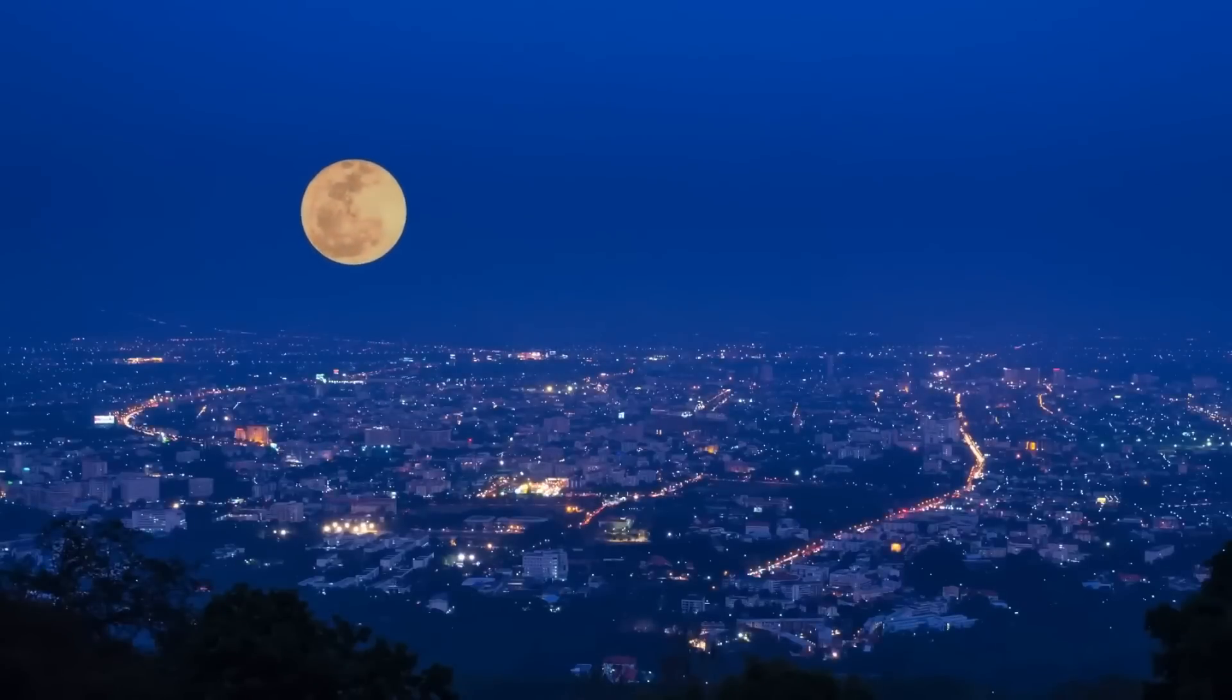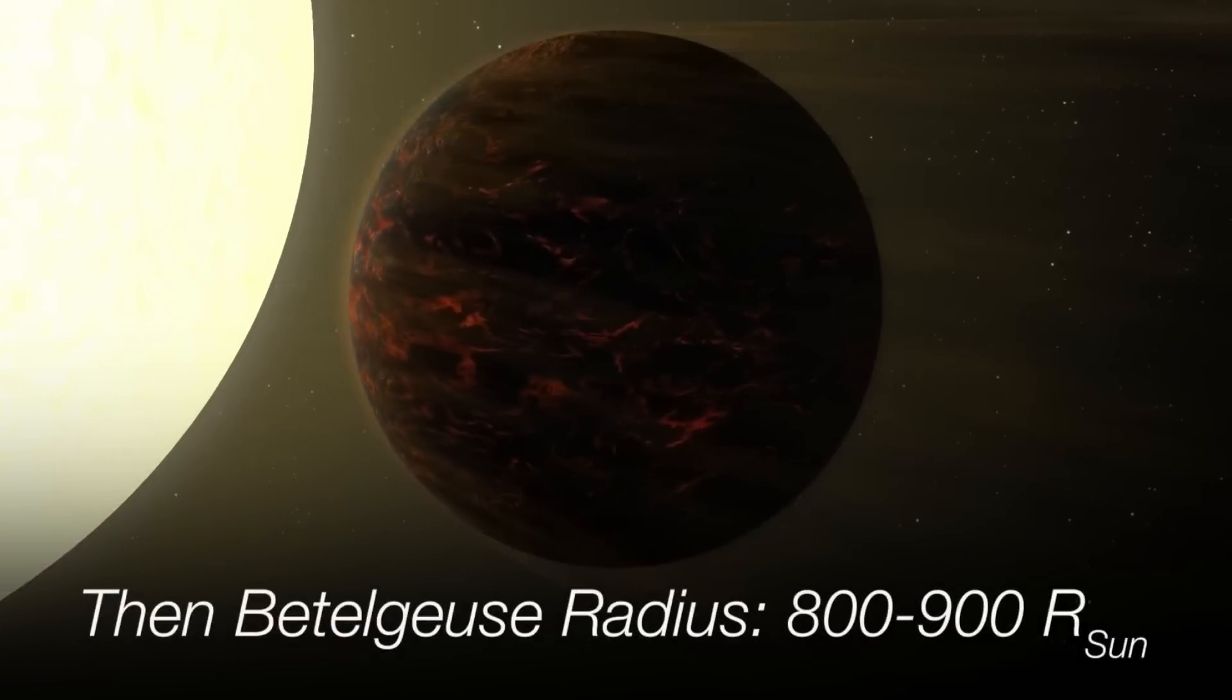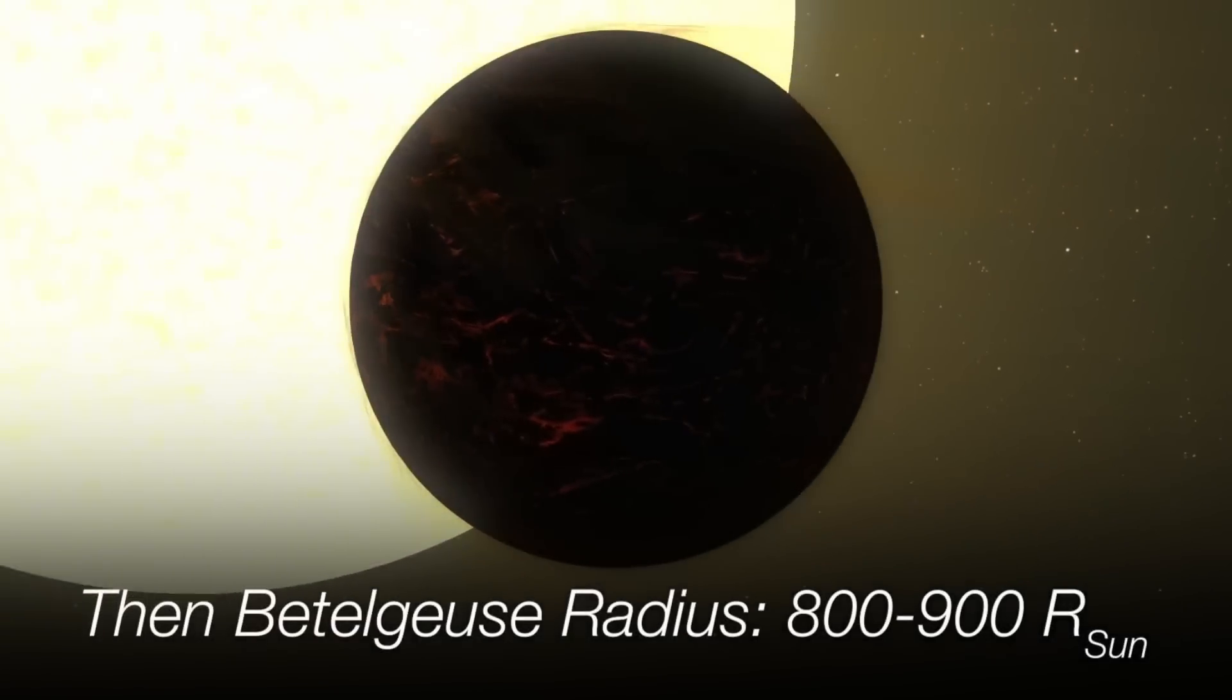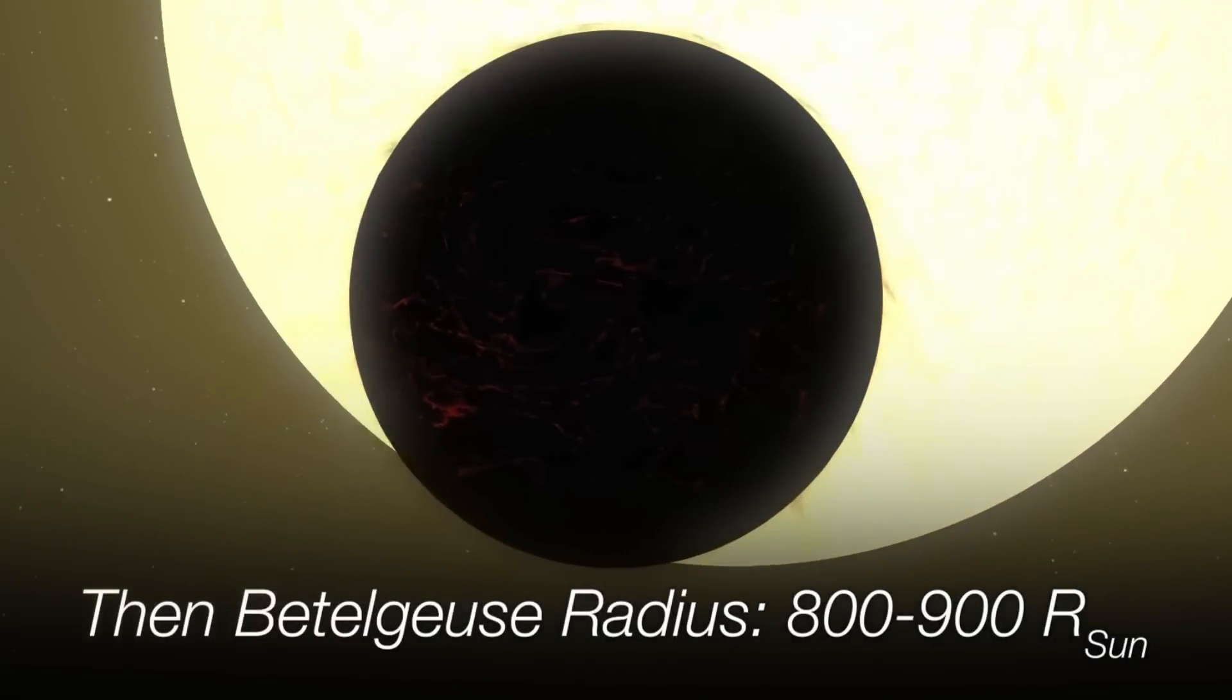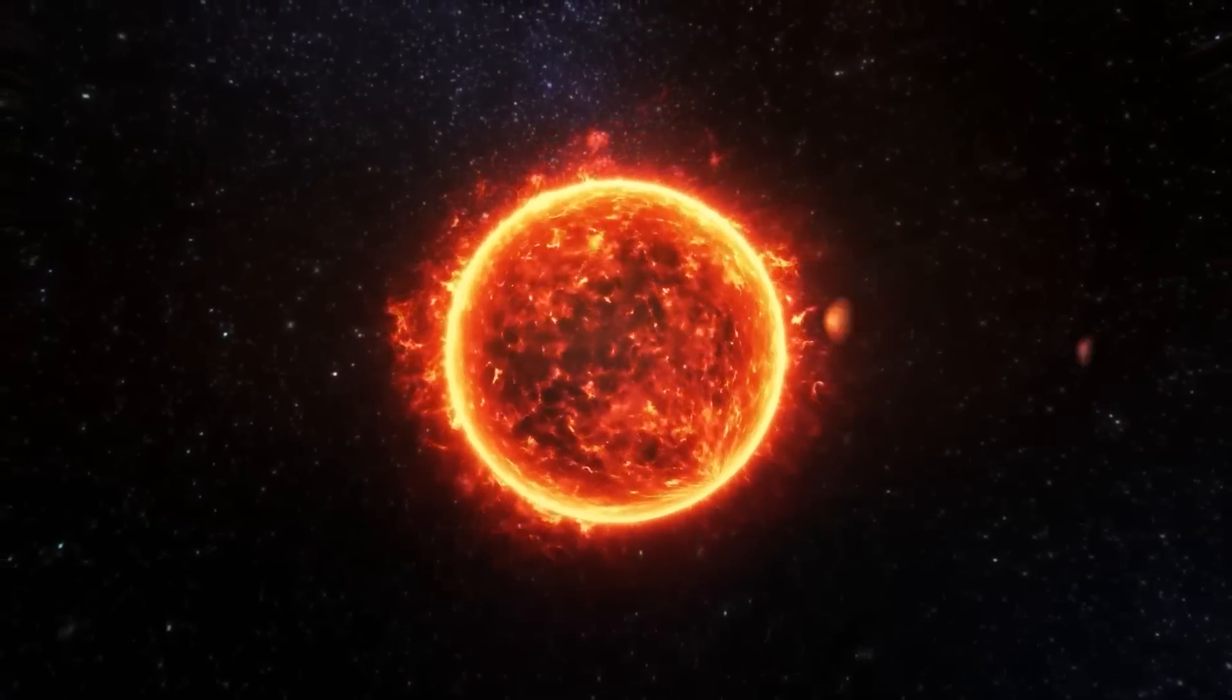Now, here's where things get fascinating. If the 420-day period is the primary one, Betelgeuse would be so massive that you could line up 800 to 900 suns in a row. Imagine that! Placed in our solar system, it would almost reach the orbit of Jupiter.